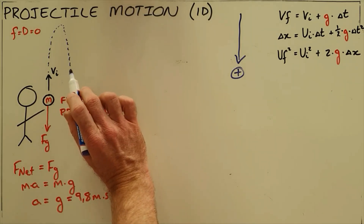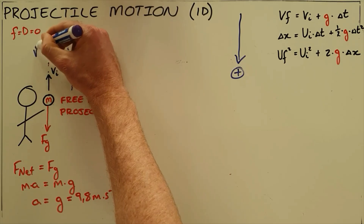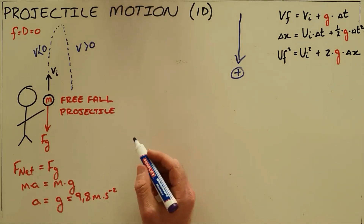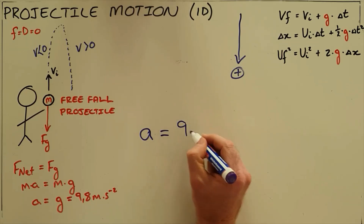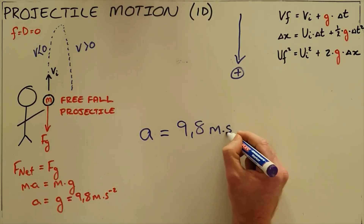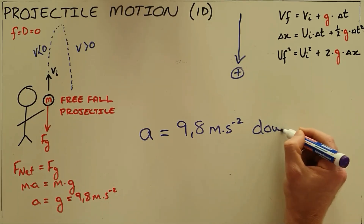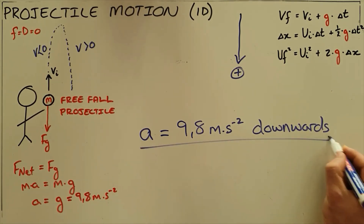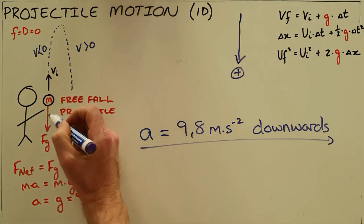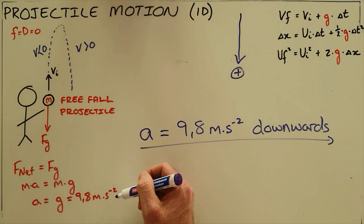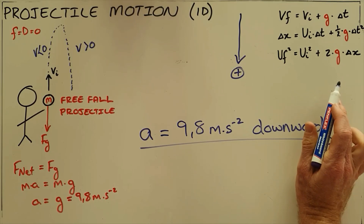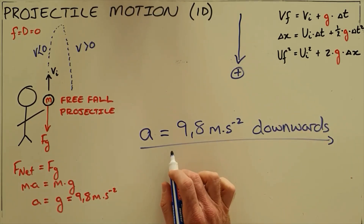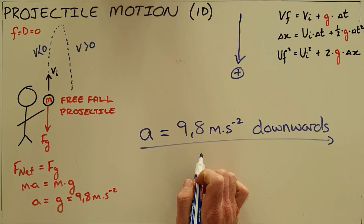Although the velocity is negative as the object travels upward and becomes positive as it moves downward, it is very important to realize that the acceleration remains a constant 9.8 m/s² downward, irrespective of the direction of motion. The net force is always constantly downward, so use your reference direction to determine velocity and displacement directions, but acceleration is always downward for a projectile.